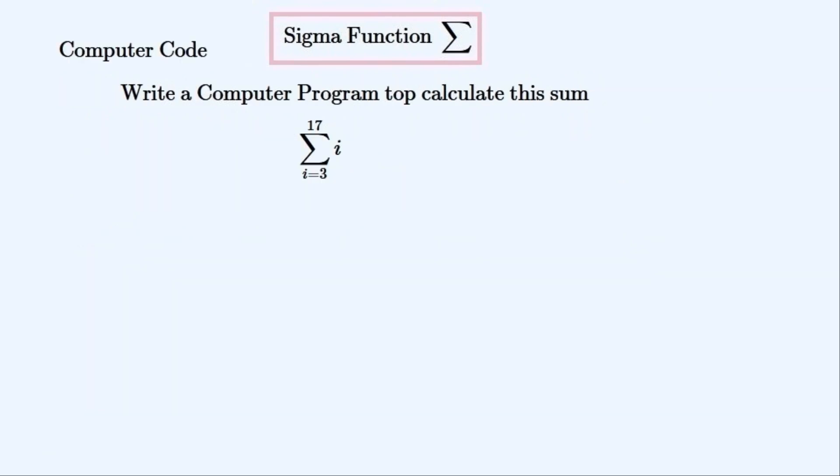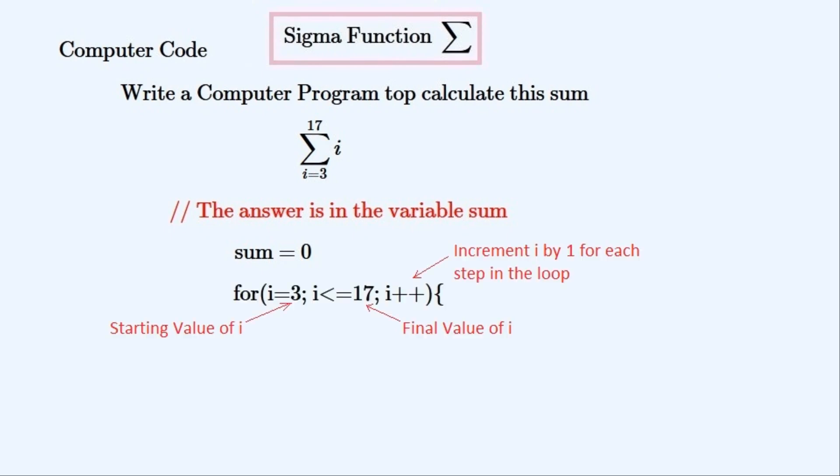Now to write simple computer code to calculate these sums that are in sigma notation. Here's the first example. We'll keep the value of this sum in the variable called sum. It's equal to zero because we're going to add each term to it in a loop so as to get the total. Here's the for loop that we'll use.